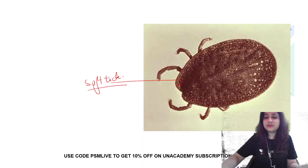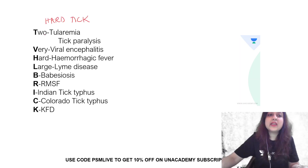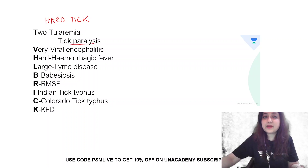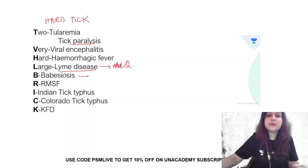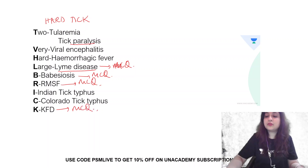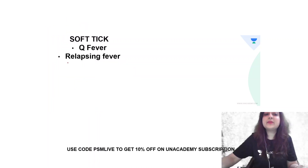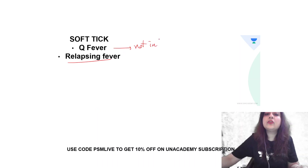Diseases caused by hard ticks — you can remember this with the mnemonic 'two very hard large bricks.' Hard tick transmits: tick paralysis, Lyme disease, babesiosis, Rocky Mountain spotted fever, and KFD — very important MCQ questions. Soft tick transmits Q fever and relapsing fever. But Q fever — not in humans through ticks; in humans, Q fever occurs through the aerosol route or contaminated milk and meat.